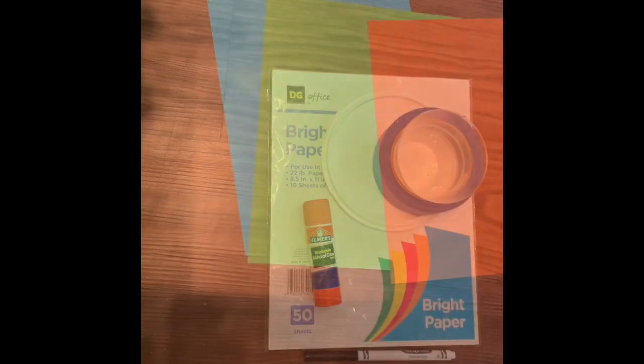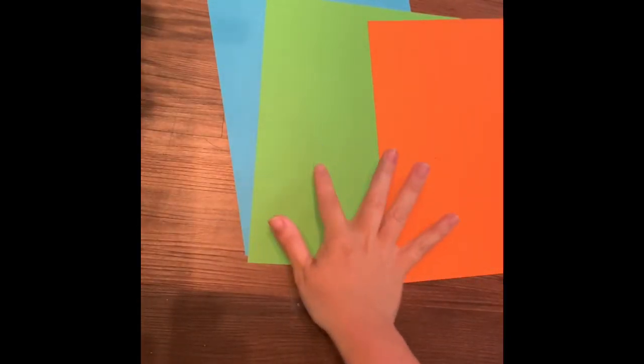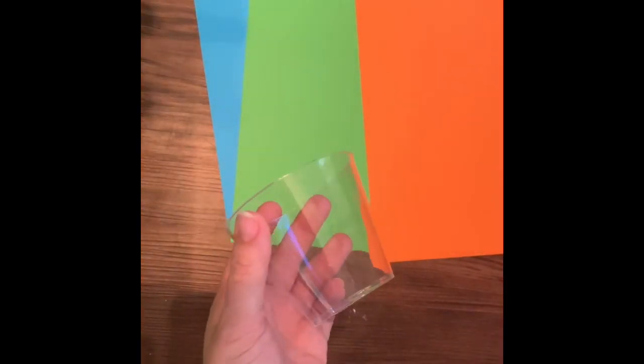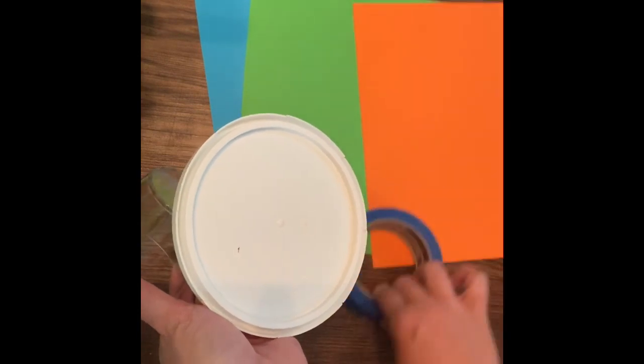Let's get started. The first step in the project is to pick three different colored papers. And then you are going to take your tracers and trace one circle out of each paper.